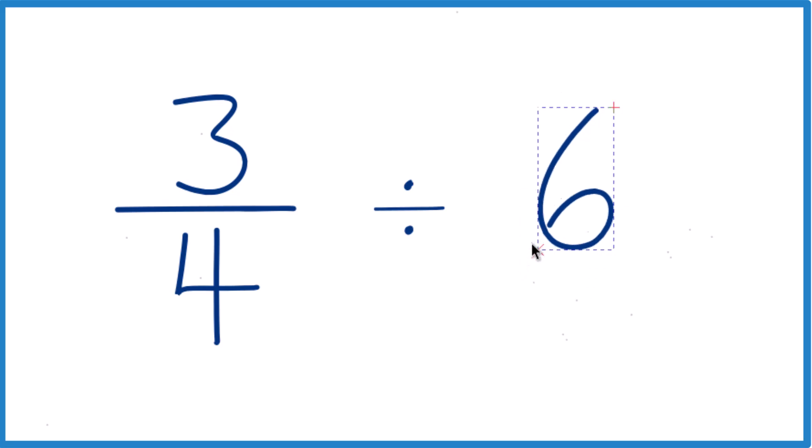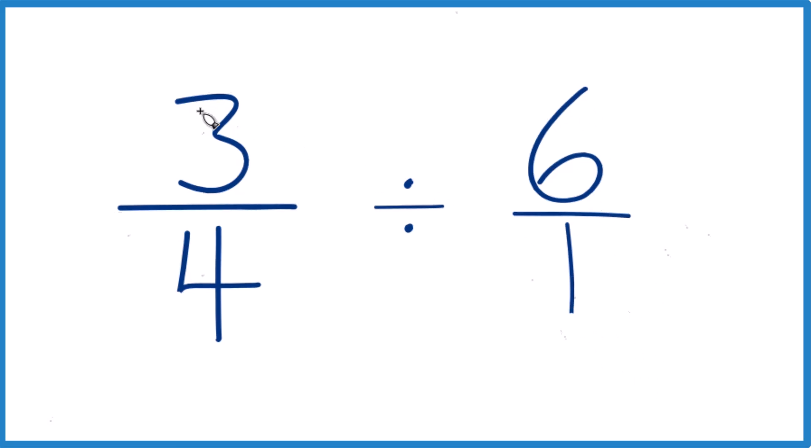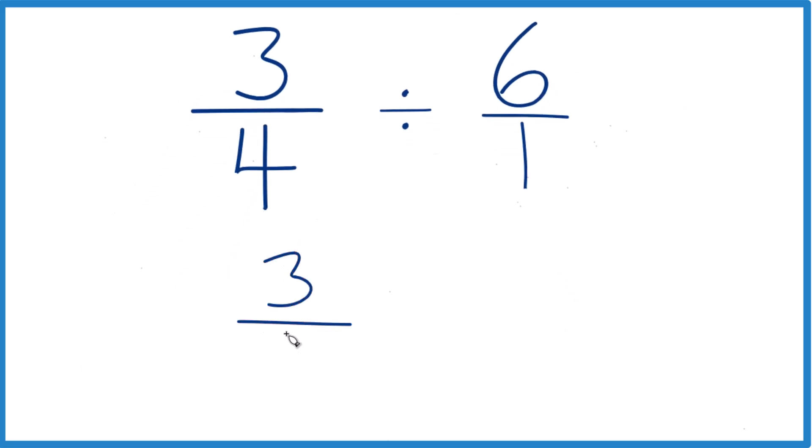The 6, let's call this 6 over 1. Because 6 divided by 1, that's still 6, but now everything's lined up.